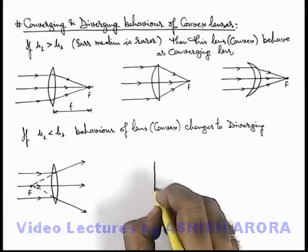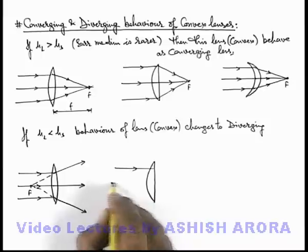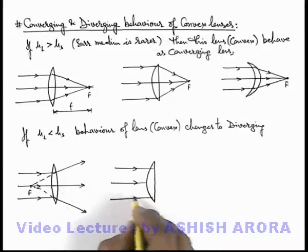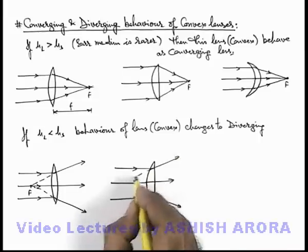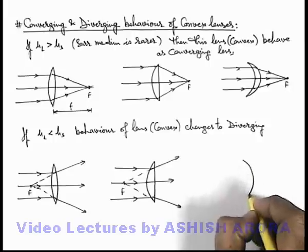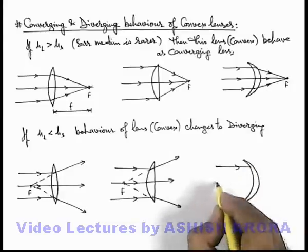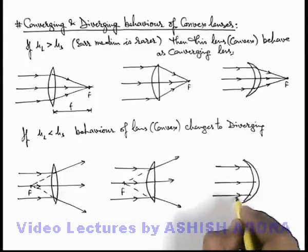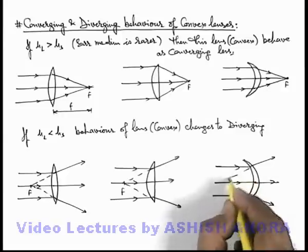The same will be the behavior in case of plano-convex lens or even if it is a concavo-convex lens, it behaves as a diverging lens after refraction from the two surfaces of the lens. And in this situation, the focus of the lens would be virtual and lie on the same side from which the parallel rays are incident onto it.